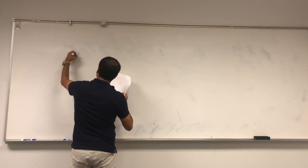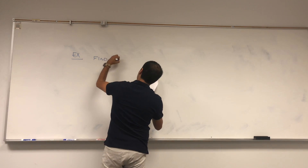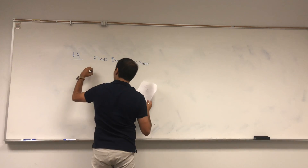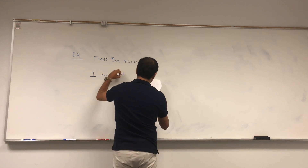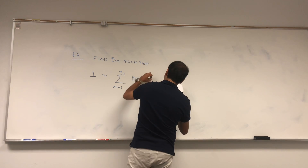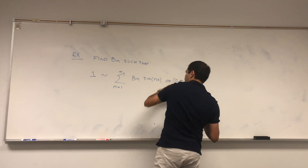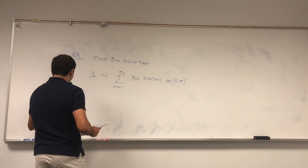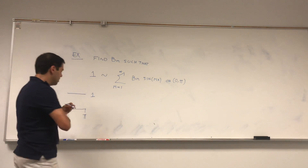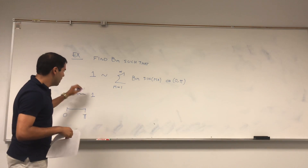So here's our problem for today. Let's find coefficients bm such that the function 1 can be expressed as the series sum from m equals 1 to infinity of bm sine of mx on the interval zero to pi. So we have the interval zero pi, and somehow we want to approximate 1 as much as we can with just sine functions.